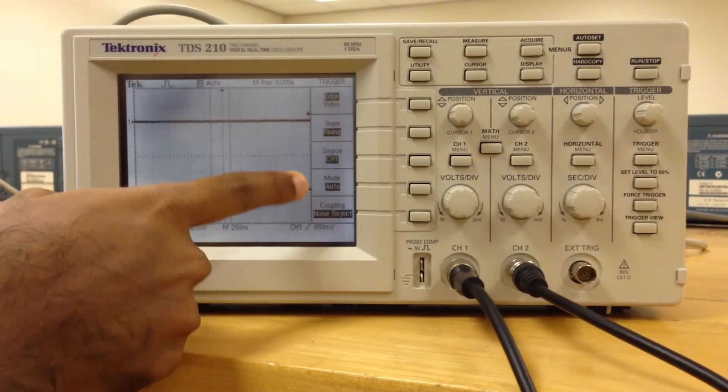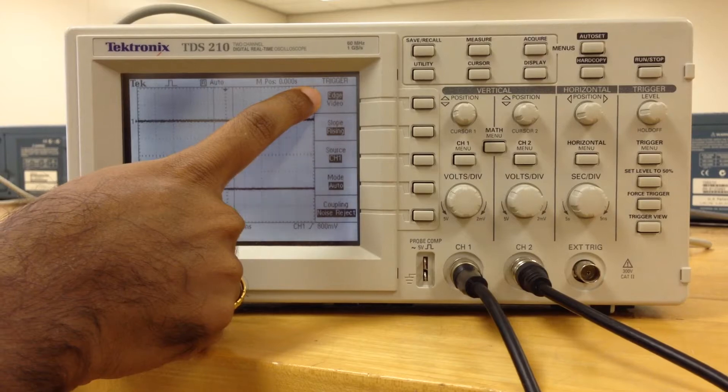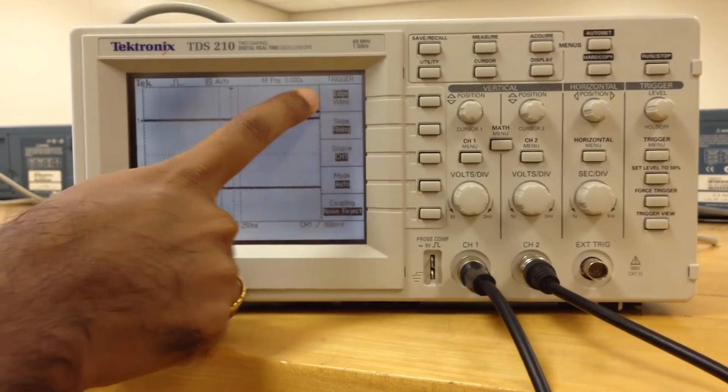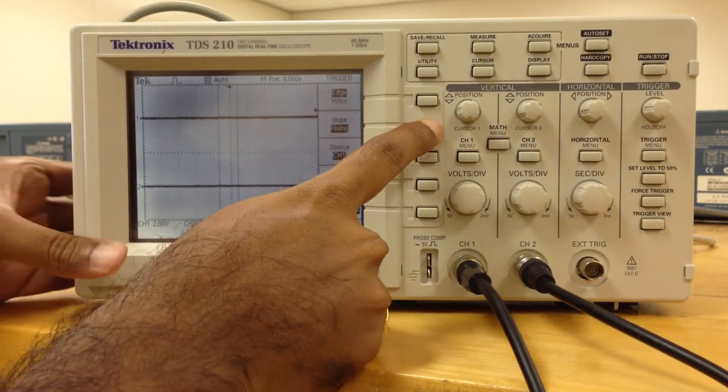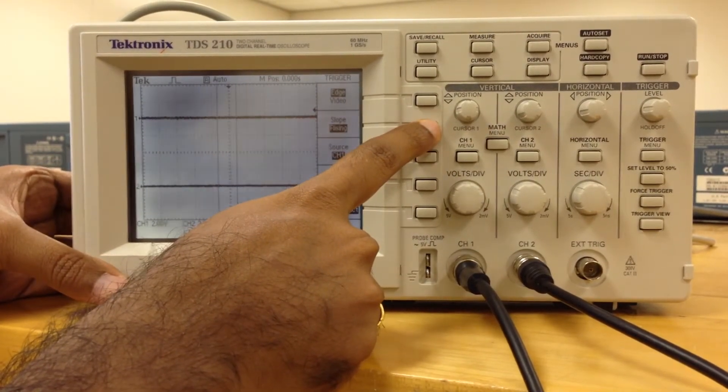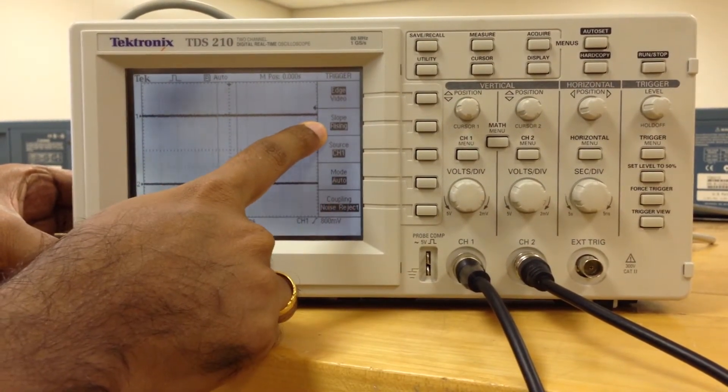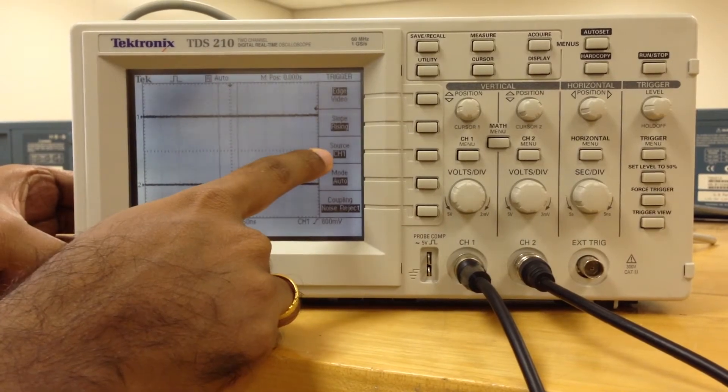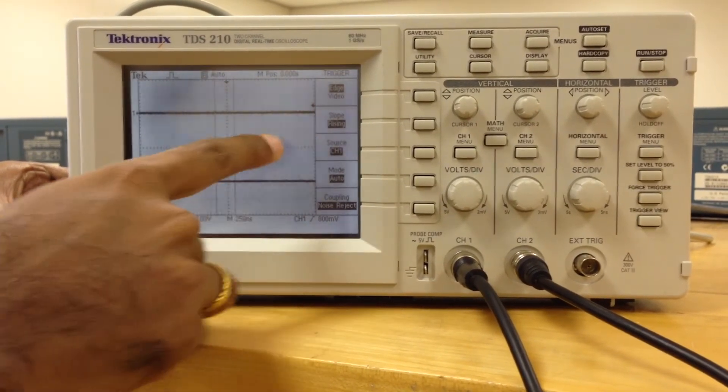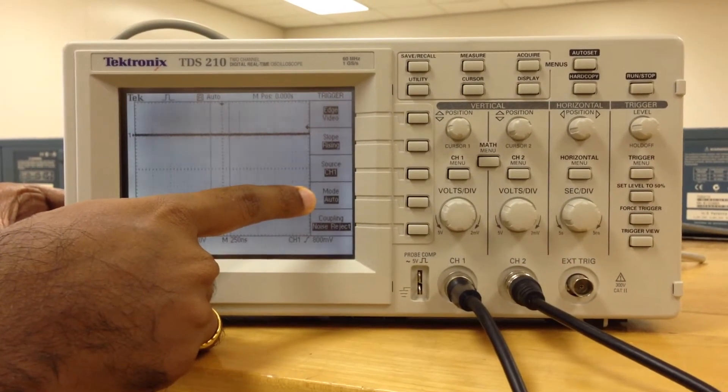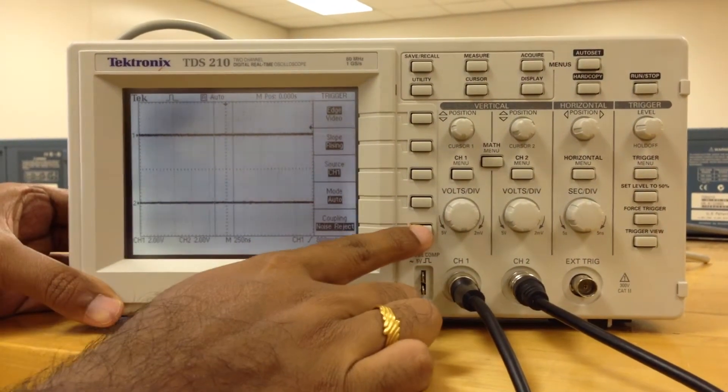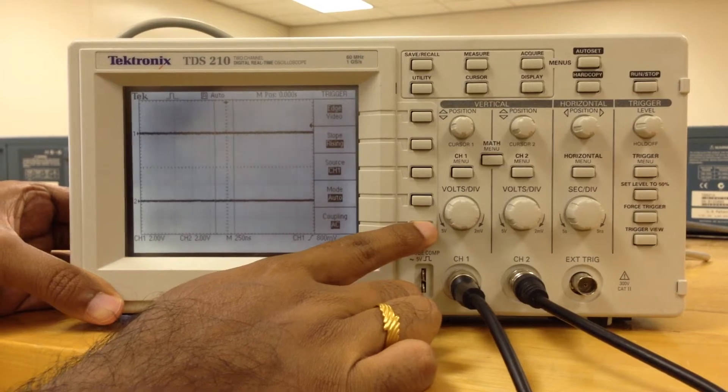Now have a look at this menu. Here, edge should be in rising edge. We can change this by pressing this button—falling edge, rising edge—so make sure to keep it at the rising edge. The source is channel 1, and mode needs to be initially in auto, and then the coupling needs to be set to DC.